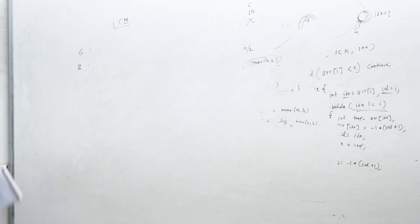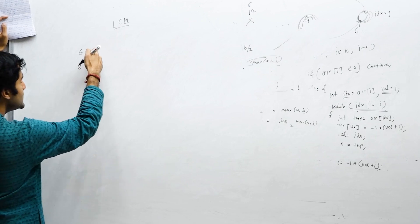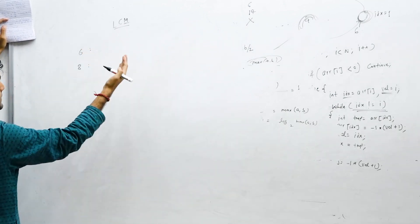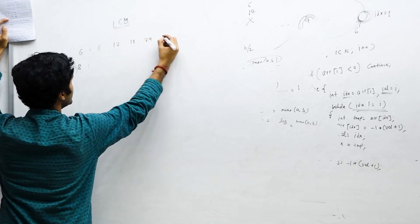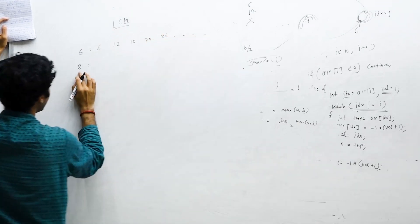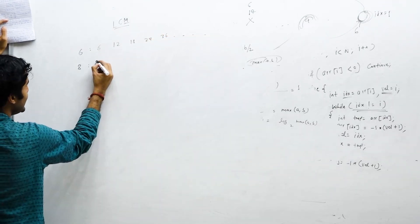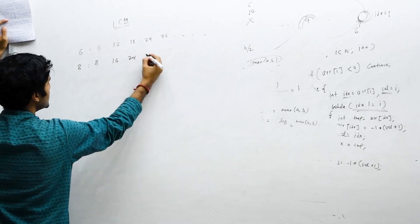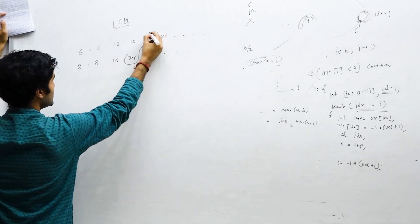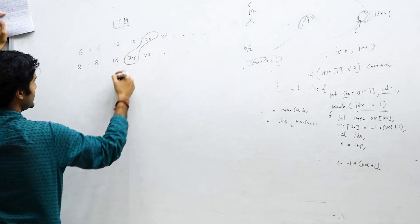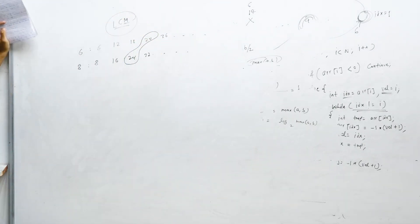So let's say you have numbers like 6 and 8. What is the meaning of lowest common multiples? 6 will have different multiples: 6, 12, 18, 24, 36, and so on. 8 will also have so many multiples: 8, 16, 24, 32, and so on.